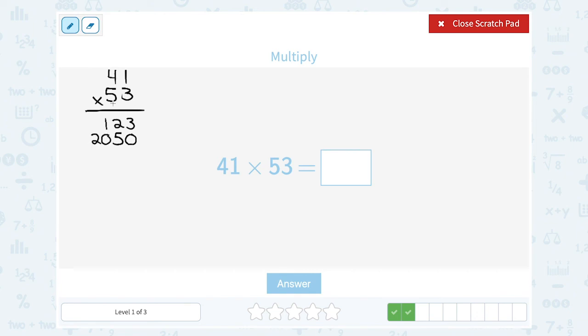And because we multiplied one digit at a time, this 123 is 3 times 41. This 2050 is 50 times 41. So I've got to add them together to get 53 times 41. So we're just going to add up the numbers in each place value or in each column. So in the ones place, 3 plus 0 gives me 3. In the tens place, 2 plus 5 gives me 7.